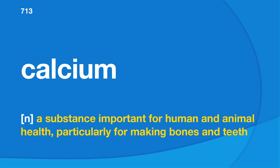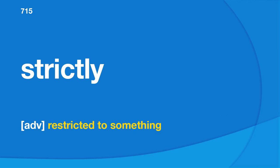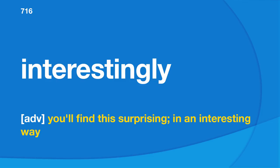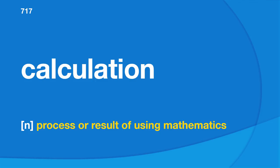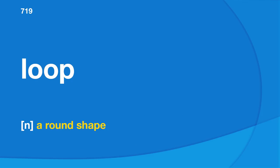Viable: able to be done, possible. Interrupt: to cause something to stop happening for a time. Depict: to describe someone or something. Kilometer: a metric unit of length equal to 1000 meters. Calcium: a substance important for human and animal health, particularly for making bones and teeth. Novice: a person with little or no experience in a particular activity, skill, or subject. Strictly: restricted to something. Interestingly: you'll find this surprising in an interesting way.